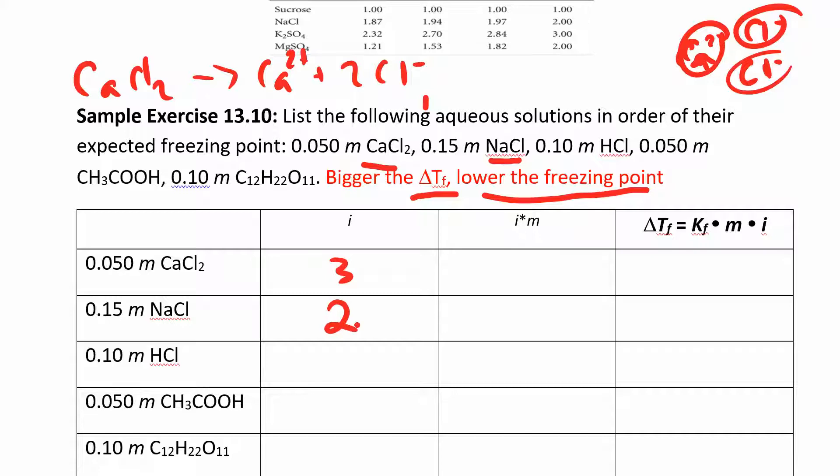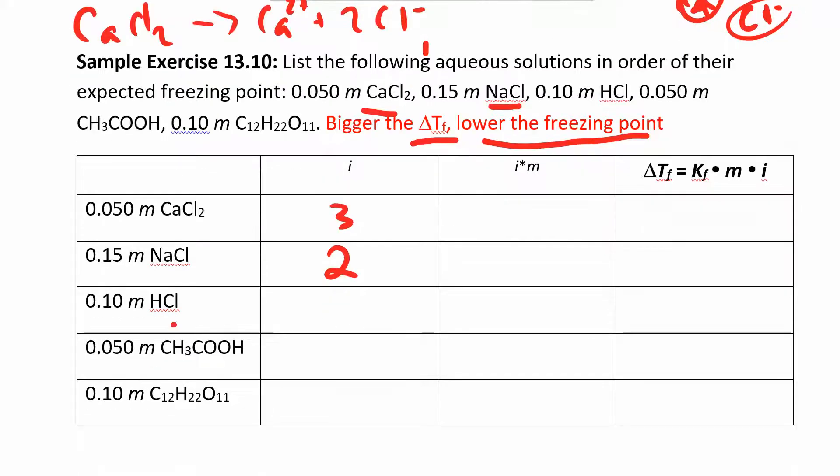Sodium chloride, we already said has a van't Hoff factor of two. HCl is a strong acid. So it's a strong electrolyte. So that will also dissociate into two particles.